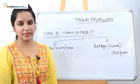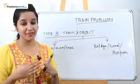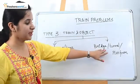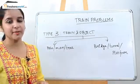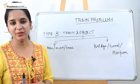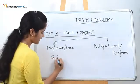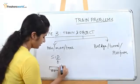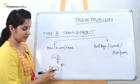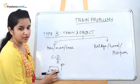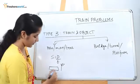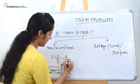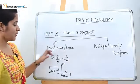Type 3 problem is train and an object. In train and object we have two types: one is a train crossing a pole, a man, or a tree; the other type is a bridge, tunnel, or platform. For a train crossing a pole, man, or tree, the distance covered by the train to cross the object is the length of the train. The train has crossed the tree when the back of the train has passed it, covering the full length of the train.